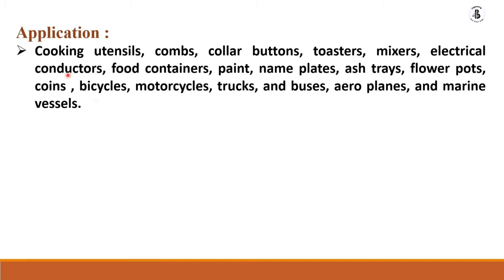Due to these properties, aluminium alloys have a wide range of applications including cooking utensils, combs, collar buttons, toasters, mixers, electrical conductors, food containers, paint, nameplates, ashtrays, flower pots, coins, bicycles, motorcycles, automobiles, trucks, buses, and many more — replacing steel materials in many areas.